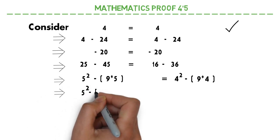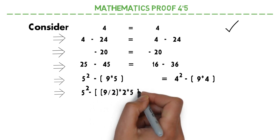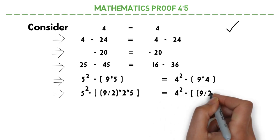Now I am writing 9 as 9 by 2 into 2. That means the same. As I have done in the left hand side, the same has been done on the right hand side as well.